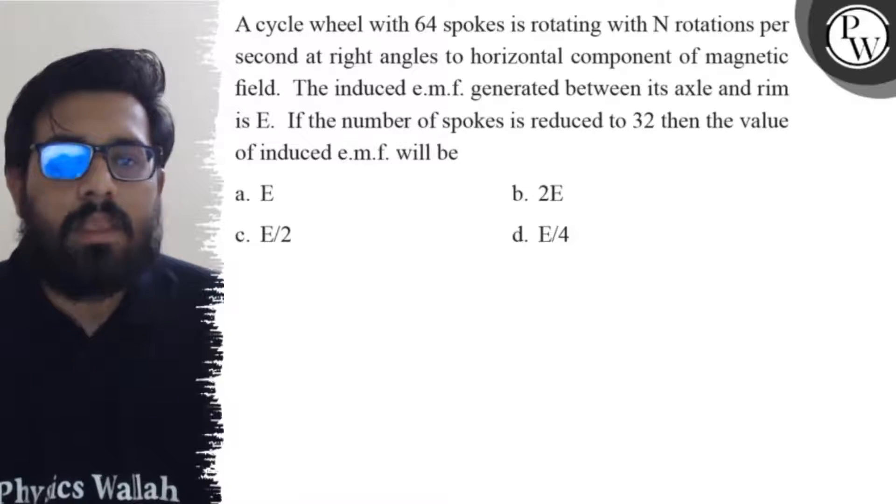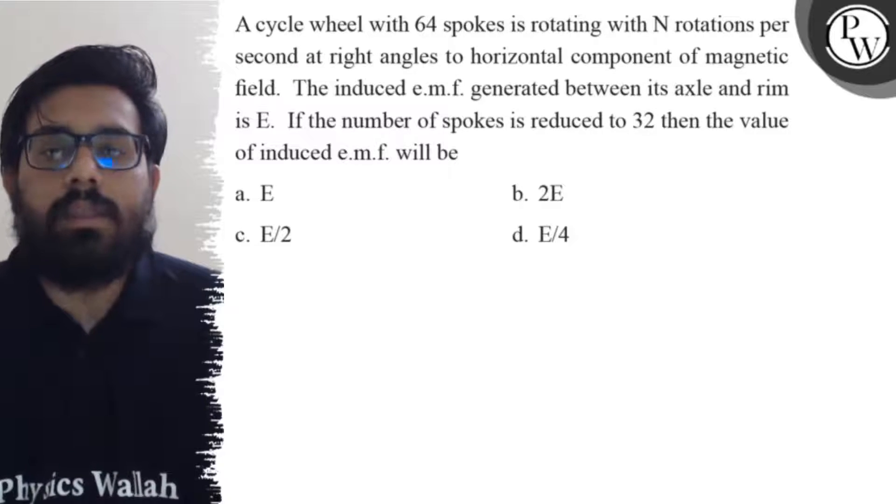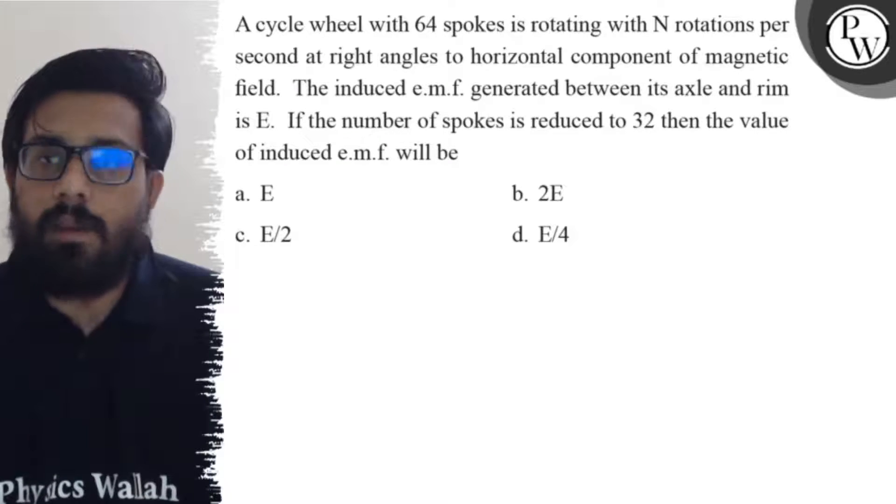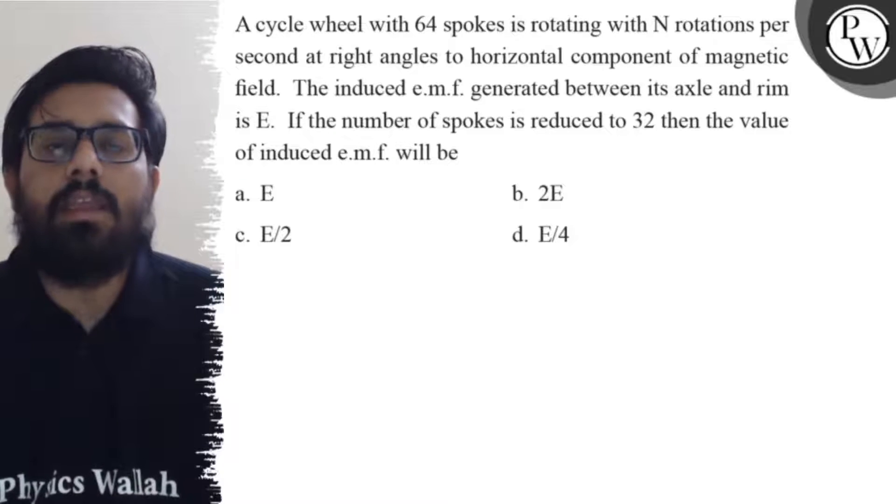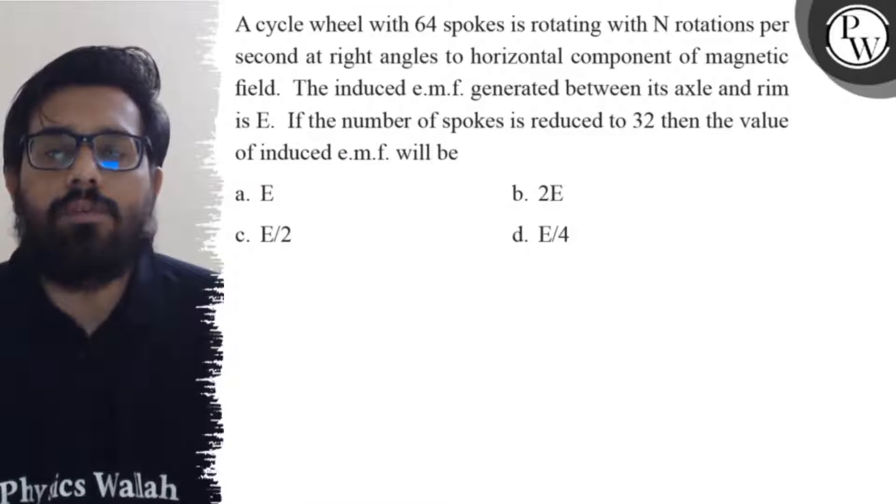If the number of spokes is reduced to 32, then the value of induced EMF will be: your first option is E, your second option is 2E, your third option is E/2, and your fourth option is E/4.